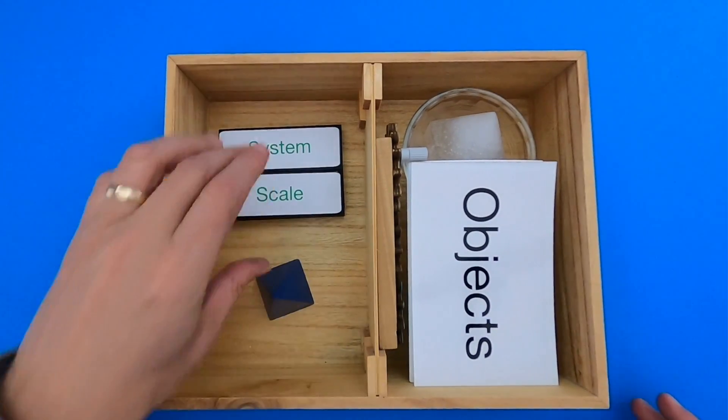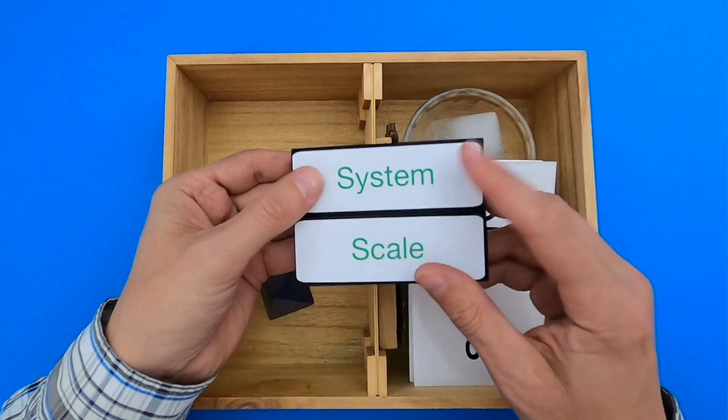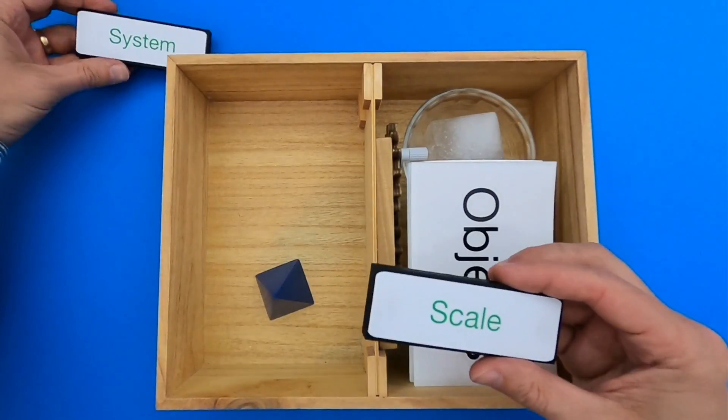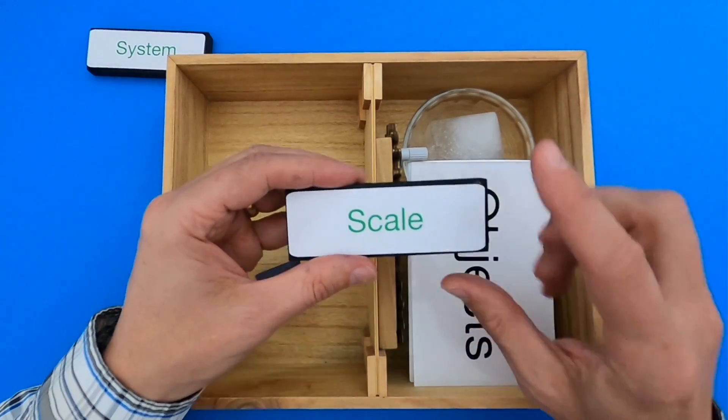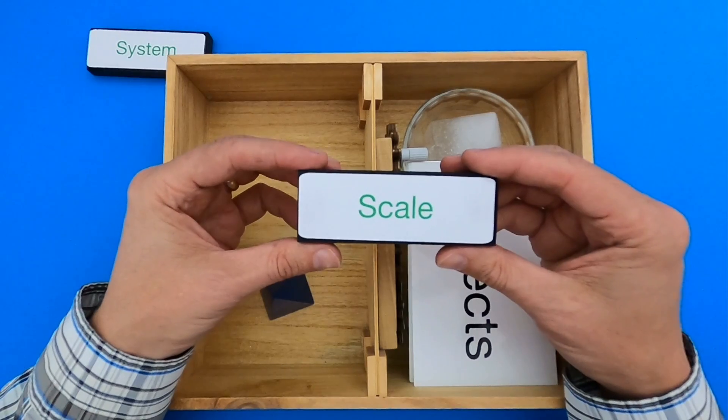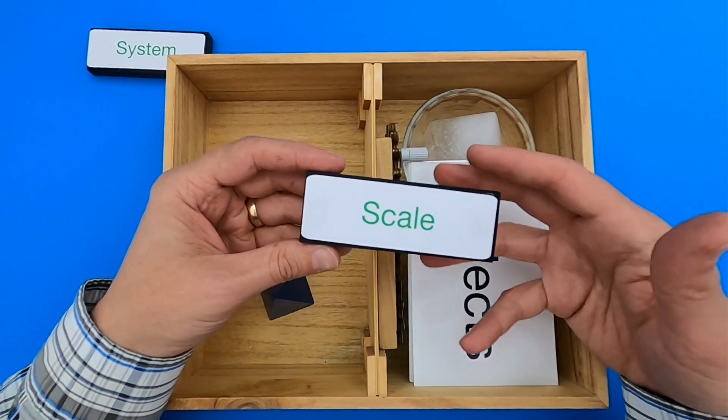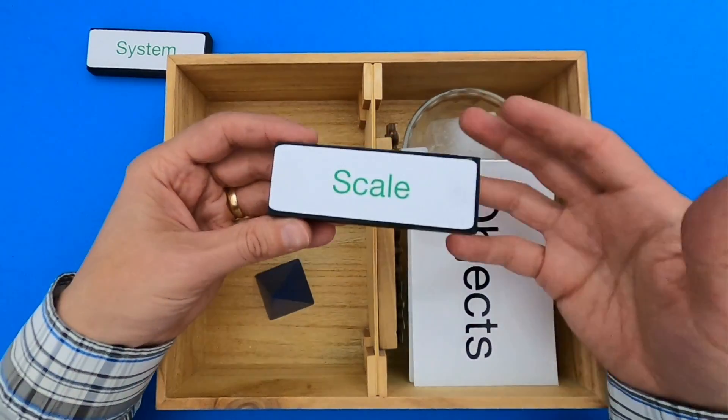First thing you want to do when you're ever describing relative scale is you identify the system that we're going to investigate. We'll do that in just a minute. But we're going to be talking about one definition of scale, which is basically the extent of something or the size of something.